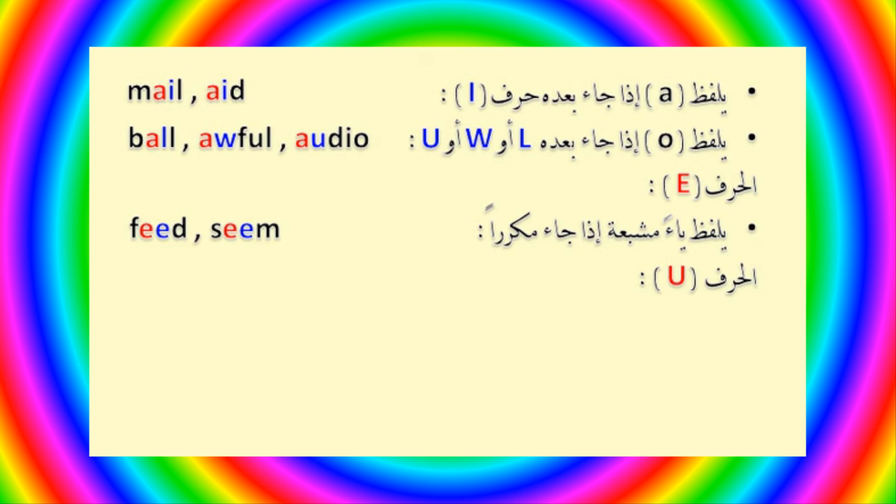الحرف الثالث هو الحرف U. إذا جاء قبله حرف O فيتم لفظهما معاً، مثال: mouse, out.